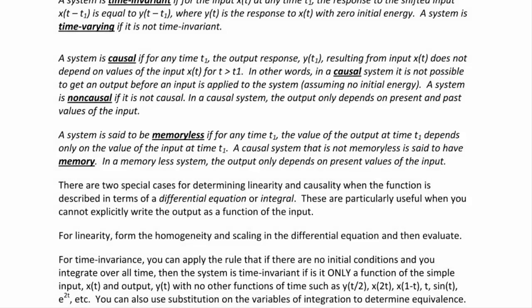There are two special cases for determining linearity and time invariance when the system is described by a differential equation or integral — useful when you cannot explicitly write the output as a function of the input. For linearity, form the homogeneous and scaling factors in the differential equation. For time invariance, if there are no initial conditions and you integrate over all time, the system is time invariant if it involves only simple x(t) and y(t) with no other functions of time such as y(t/2), x(2t), x(1−t), t, sin(t), e^(2t), etc. You can also use substitution on the variables of integration.